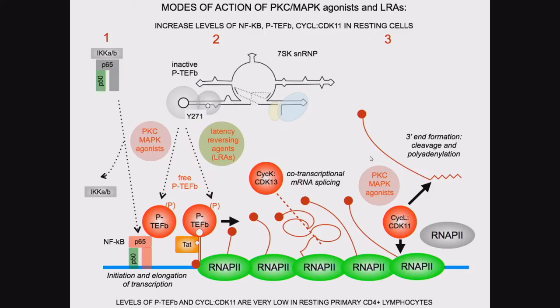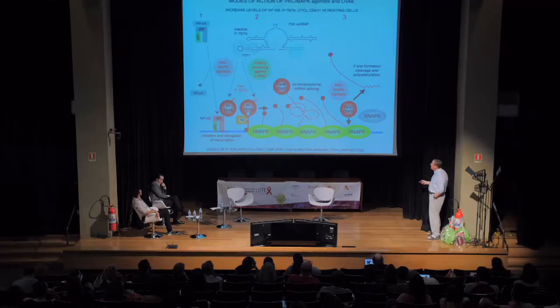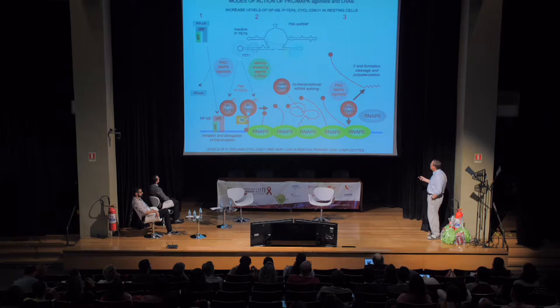The strategies so far have been to use a PKC agonist and a latency reversal agent as a combination therapy for HIV. The reason they are synergistic is that most latency reversing agents — like histone deacetylase inhibitors or BET-bromodomain inhibitors — cannot increase the levels of P-TEFb. So they cannot work on resting cells without PKC agonists, because PKC agonists are the only ones that can lead to phosphorylation of the T-loops, stabilization of the kinase complexes, and activation of the kinases required for HIV transcription. You require something to activate P-TEFb, something to activate Cyclin-L CDK11, and then the latency reversing agents can start working and allow completion of viral transcription.